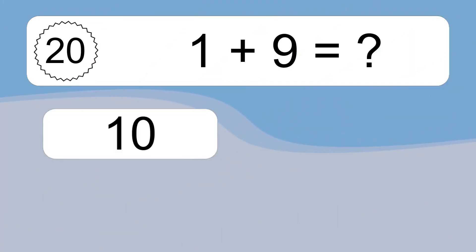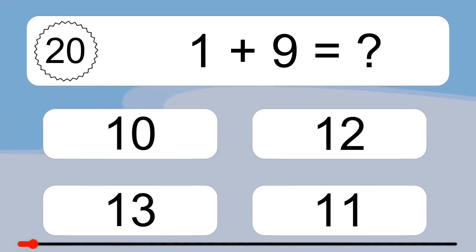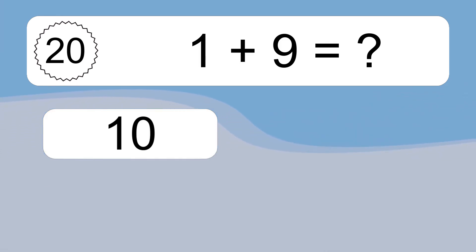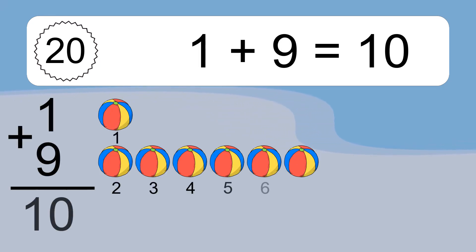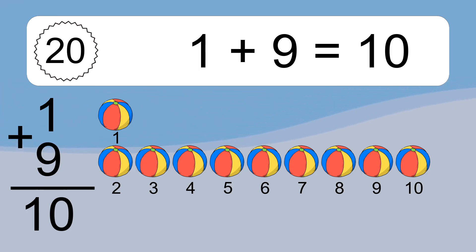1 plus 9 equals what? One plus nine equals ten. Let's count it: one, two, three, four, five, six, seven, eight, nine, ten.